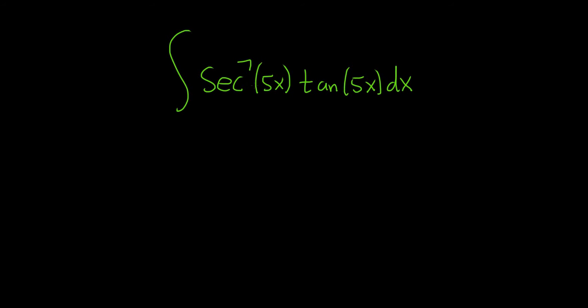So here the power of secant is not even so that doesn't work. But the power of tangent is odd, it's to the first power. So we want to save a secant tangent. So what do I mean by that exactly?